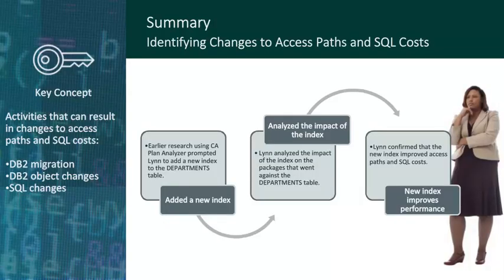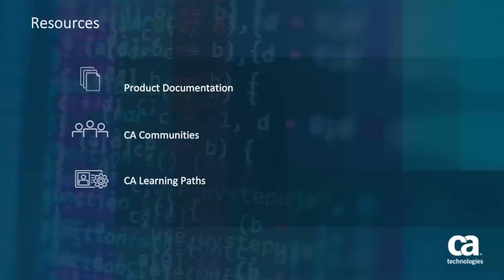Today Lynn used CA Plan Analyzer to verify that her new index improved the performance of her queries before rebinding her packages. Now that she's confirmed the new index will have a positive impact on query performance, Lynn can perform her rebinds with confidence. Additional resources are available, including the product documentation, the CA Database Management for DB2 and IMS community, and CA technical support. For more information, see the CA Plan Analyzer documentation at docops.ca.com. Thank you for viewing this video. This concludes the training on the CA Plan Analyzer process for identifying changes to access paths and SQL costs.